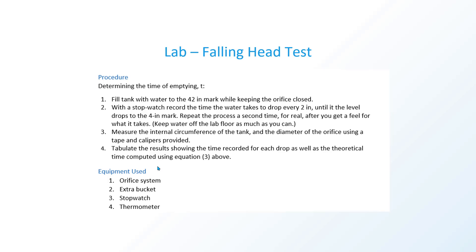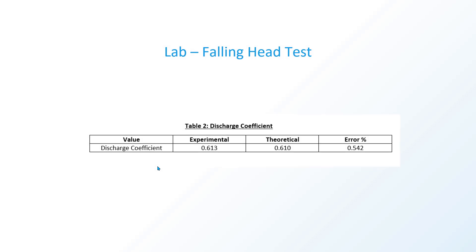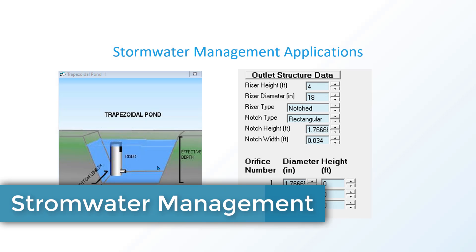Based on the times you collect and that data, you can adjust and determine the discharge coefficient for the orifice you're using. This phenomenon can be observed through lab testing, and based on that lab you can then calculate the theoretical percent error. It's a quick experiment you can do to determine that discharge coefficient.